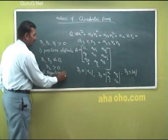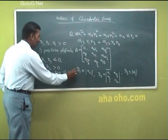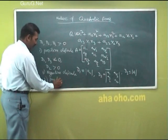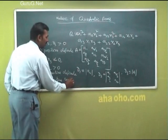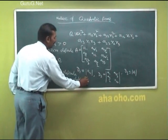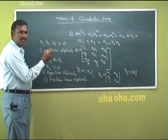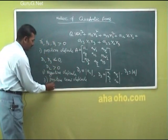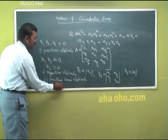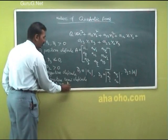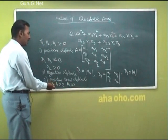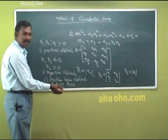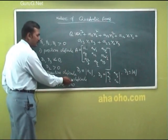Positive semi-definite: D1, D2, D3 are all positive and at least one of D1, D2, or D3 is equal to zero. For example, D1 and D3 are greater than 0 and D2 equals 0, or D2 is positive and D3 equals 0. The quadratic form is called positive semi-definite.